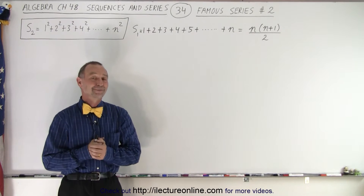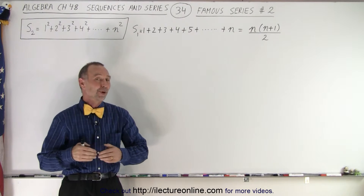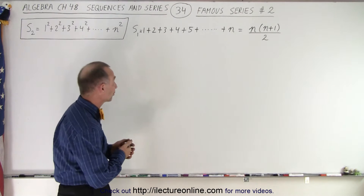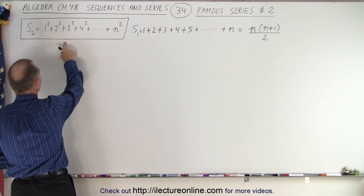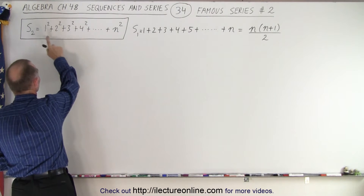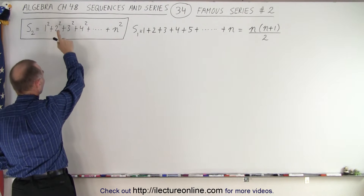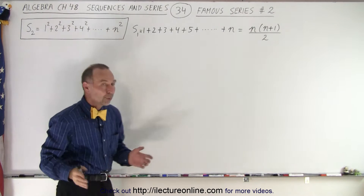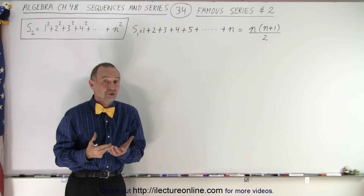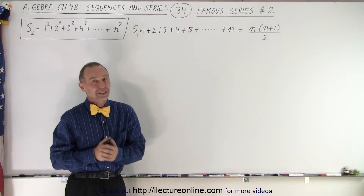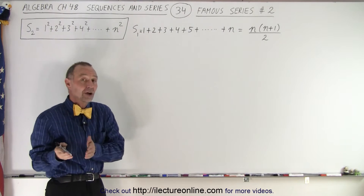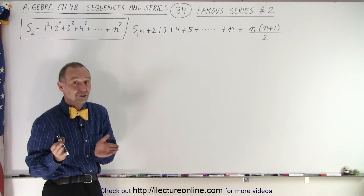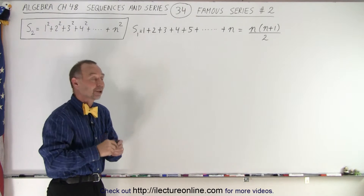Welcome to ElectroOnline. Here's our most interesting special series, special series number 2, which is this one on the left right here, where it's the sum of 1 squared plus 2 squared plus 3 squared all the way up to n squared. We want to get a general equation to calculate what that is equal to. We already saw in a previous video what it was, but now let's try to actually derive that equation.